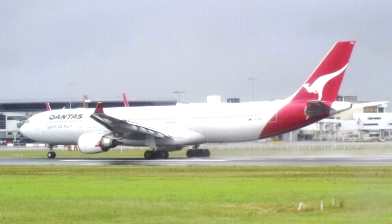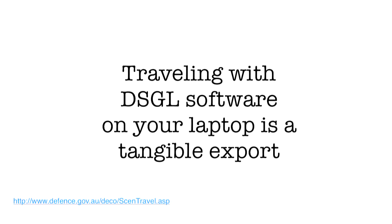Most of you probably don't accidentally export goods often — there's too much paperwork involved with customs and shipping. But has anyone gone on a plane out of Australia and taken their laptop? That can be a problem. If you're travelling with any non-exempt DSGL-controlled software or technology on your laptop and you take it outside of Australia, that counts as an export and you need a permit to do that. It's pretty unlikely you actually have any DSGL-controlled software, but let's explore this.